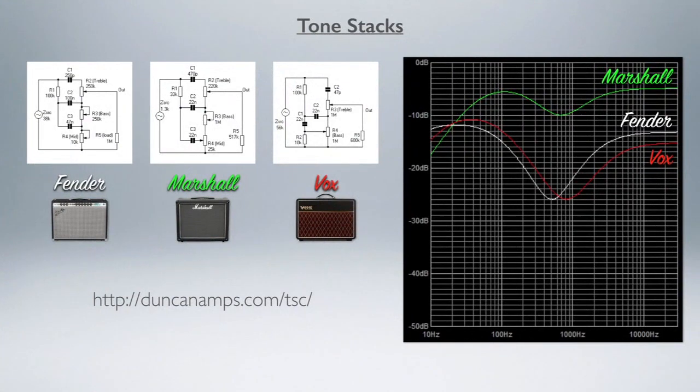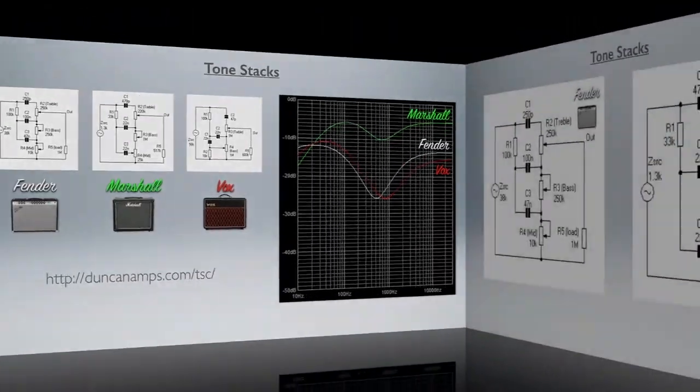I have three basic tone stacks: Fender, Marshall, and Vox. The Fender's in white, the Marshall's in green, and the Vox is in red. You can see the Fender and Vox are pretty similar - the Vox's frequency response is just transposed to the right a little bit. The Marshall's quite different. One thing you notice about the Marshall is it's a lot hotter. Let's A/B just the Fender and the Marshall circuit.